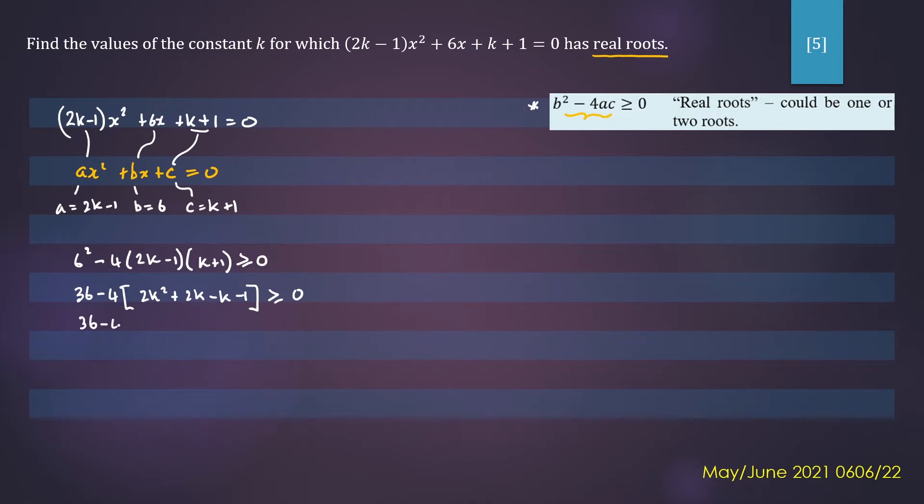You will have 36 - 4 times (2k² + k - 1) ≥ 0. Now we'll expand the 4 into the bracket. So we'll have 36 - 8k² - 4k + 4 ≥ 0.